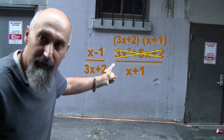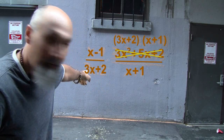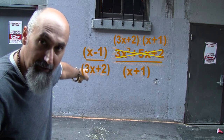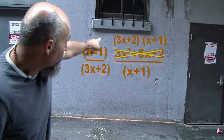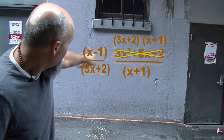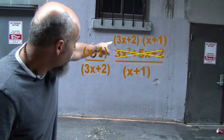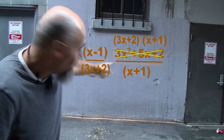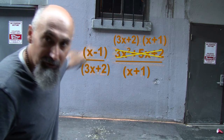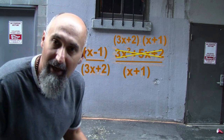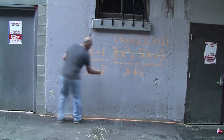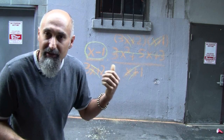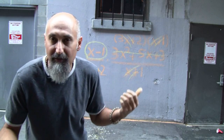Once we factor the trinomial, we can see that (3x + 2) appears in both the numerator and denominator — those cancel out. And (x + 1) appears in both the numerator and denominator — those cancel out too. So all we're left with is x − 1. This whole expression multiplied together simply equals x − 1.